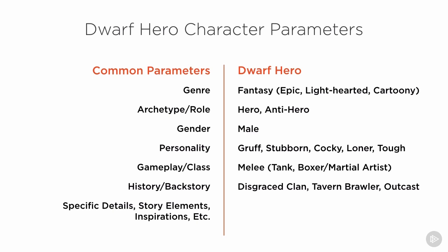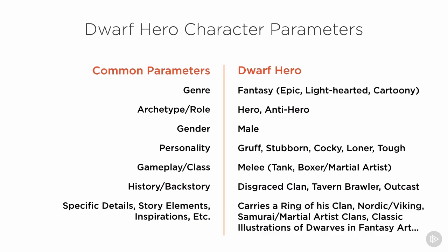I've also added a section here at the bottom that includes specific details, key story elements of note, and possible visual direction we might pull from during our research. For this project, this includes an important item our hero carries — an insignia ring of his now disgraced clan. I've also included some topics I plan to research for my visual reference, such as Nordic or Viking motifs, martial arts clubs, samurai clans, as well as the work of golden age fantasy illustrators.